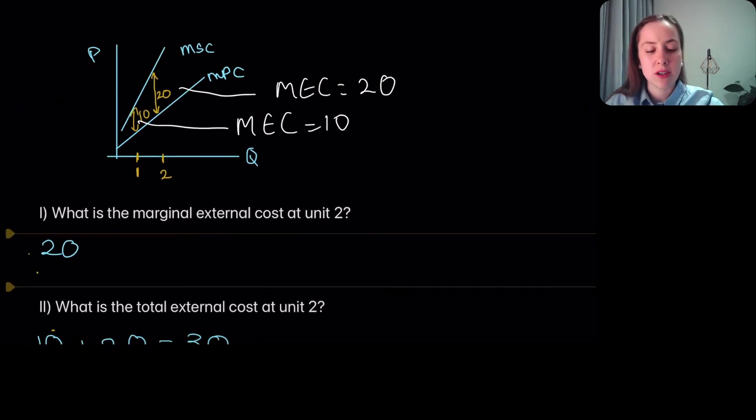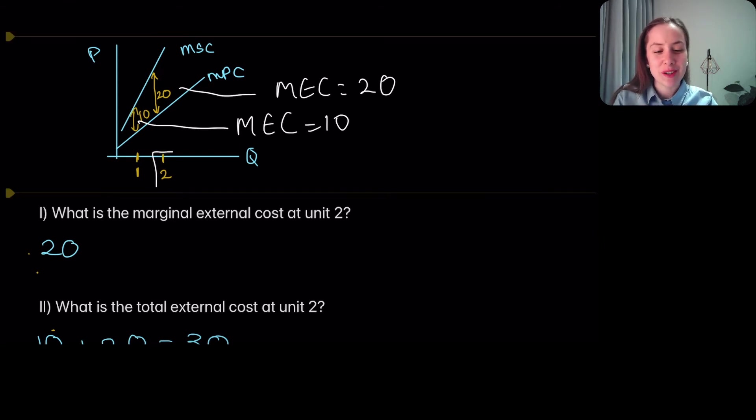So here's the first question: What is the marginal external cost at unit 2? That would be the extra cost that was faced to make just the second unit. Just the second unit had a 20 addition to cost, so the marginal external cost is 20.